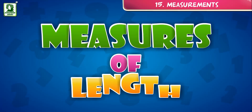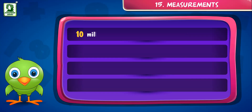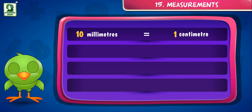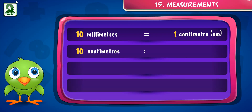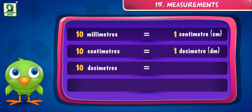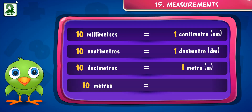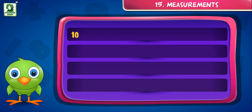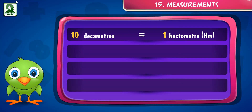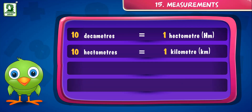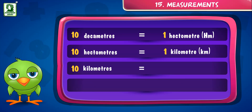Measures of length. 10 millimeters is equal to 1 centimeter. 10 centimeters is equal to 1 hectoliter. 10 deciliters is equal to 1 kilometer. 10 meters is equal to 1 decimeter. 10 decimeters is equal to 1 hectometer. 10 hectometers is equal to 1 kilometer. And 10 kilometers is equal to 1 myriameter.